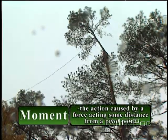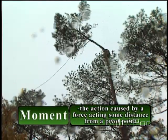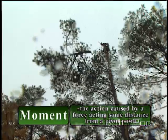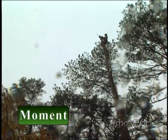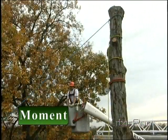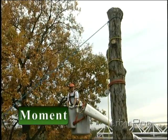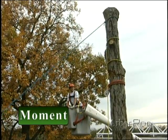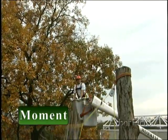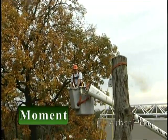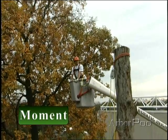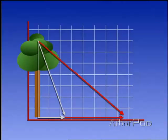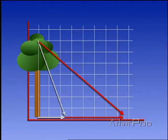Moment is the twisting action caused by a force acting some distance from a pivot point. An example of moment is when we install a pull line in the top of a tree — we are putting a force at a distance from the cut, or the pivot point. But only the component of the force that is perpendicular to the moment arm, the tree, is effective. Looking at the vector diagram, it is easy to see why our pull is more effective when we are standing some distance away and not wasting a large component of the force we impart by trying to pull the tree downward.